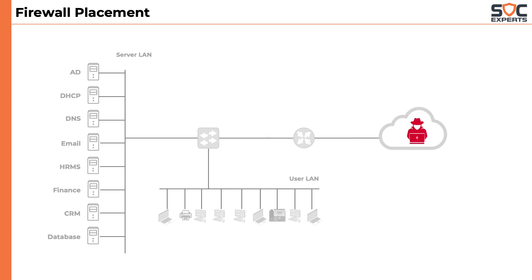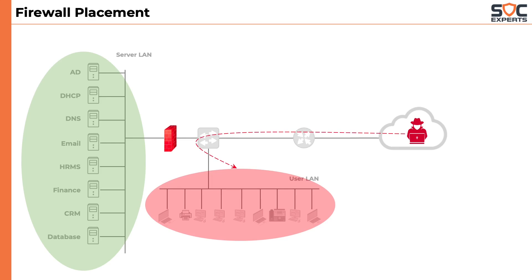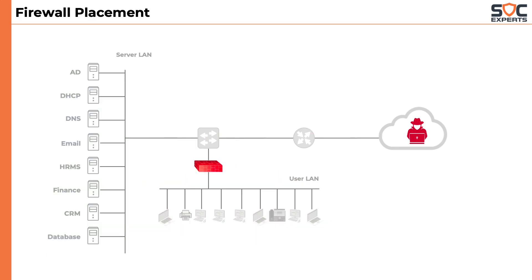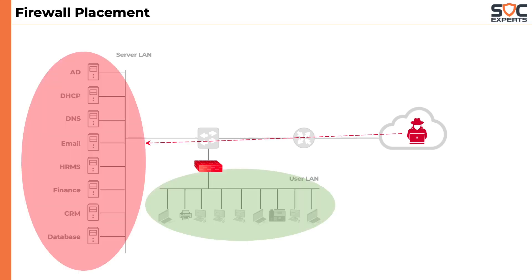Now, where should we place the firewall? One option is we could place the firewall after the core switch and before the server LAN. By doing so, we could protect our servers from the attackers, but our user machines are exposed. Alternatively, we could place the firewall on the user LAN segment, which will protect the users but expose our servers. Again, this too is not an ideal placement.